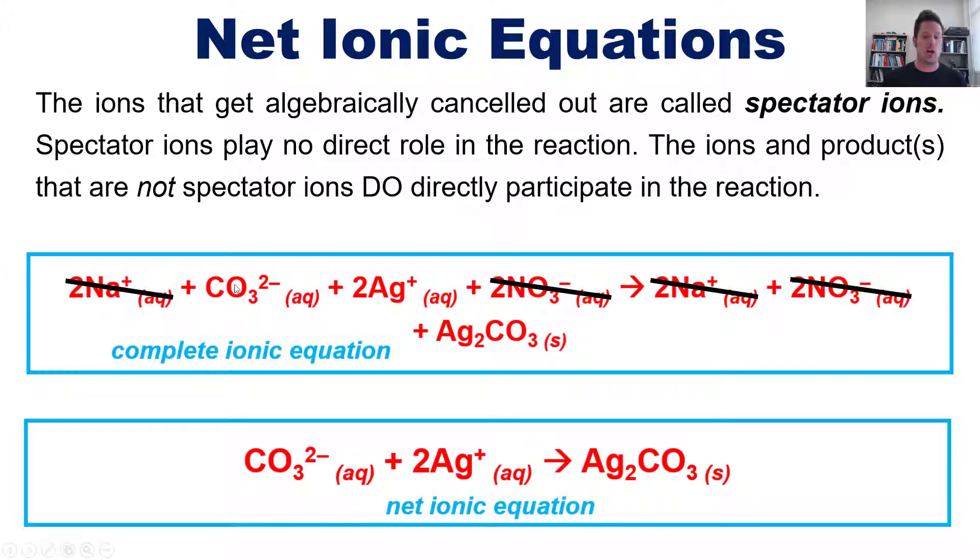The ions in the products that are not spectator ions do directly participate in the reaction. So, if you took, for example, sodium carbonate and silver nitrate and threw them together in a container and mix them together, what would happen is the sodium carbonate and silver nitrate ions would all dissolve and separate out. Then the silver ions and the carbonate ions would find each other locked together and combine to form silver carbonate.